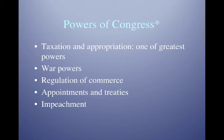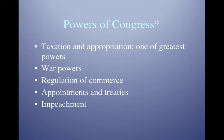The Senate — not the House — has the power to advise and consent the president on high-level executive branch appointees, judges, and ambassadors. A majority of senators must vote in favor of cabinet members, Supreme Court justices, or ambassadors. A two-thirds Senate vote is needed to ratify a treaty. Congress also has the power of impeachment — it can remove any federal official for treason, bribery, or other high crimes and misdemeanors. Only two presidents have ever been impeached: Andrew Johnson and Bill Clinton. Neither was actually removed from office, so no president has ever been removed via impeachment.